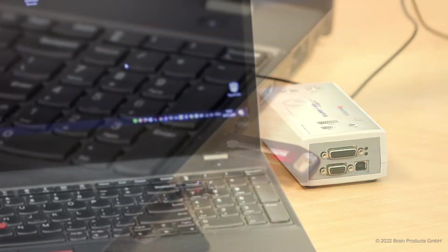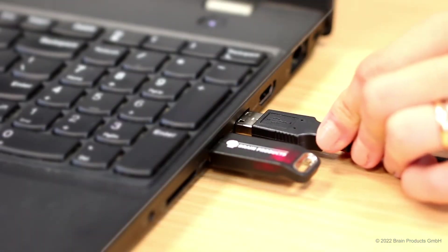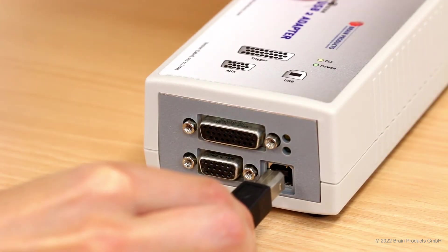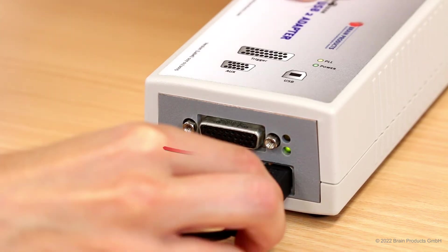When setting up your hardware, first connect the BUA to your computer using the USB port on the side of the BUA. Make sure to use only the supplied high-quality USB cable to do this. Once the BUA is connected to the computer, a green light will appear.